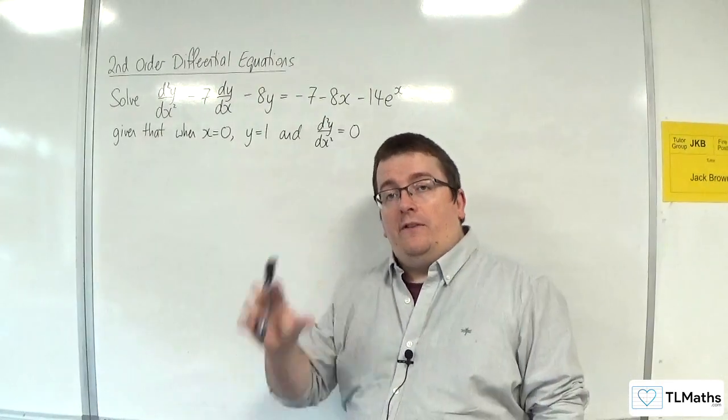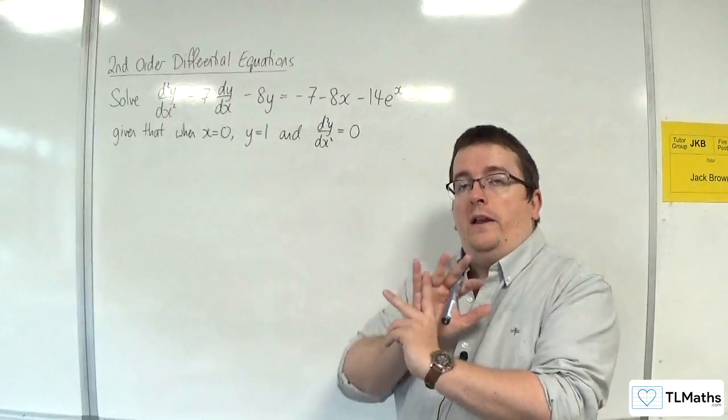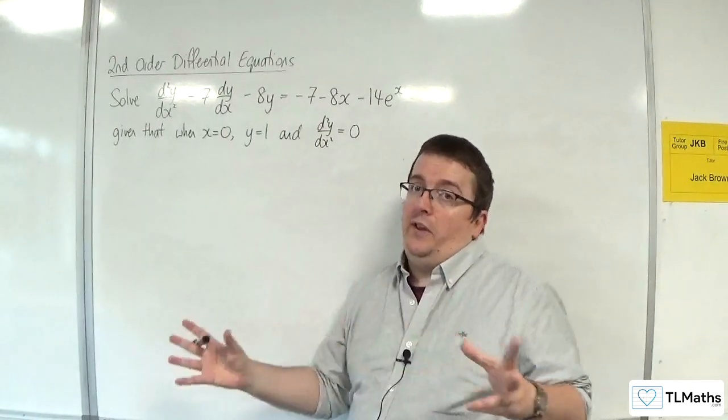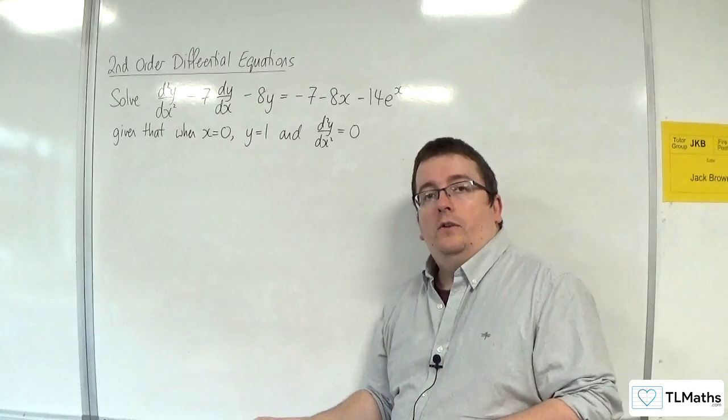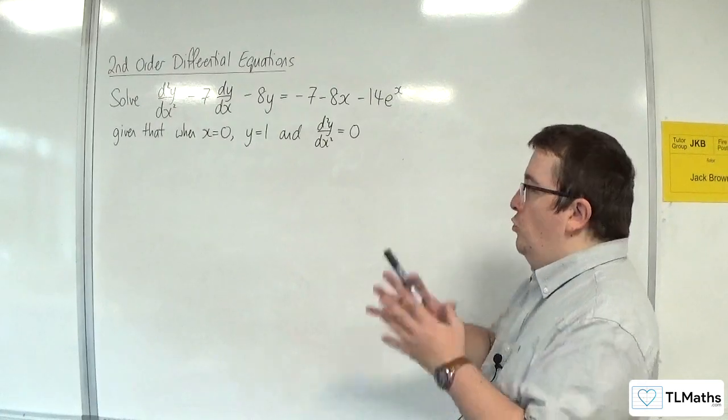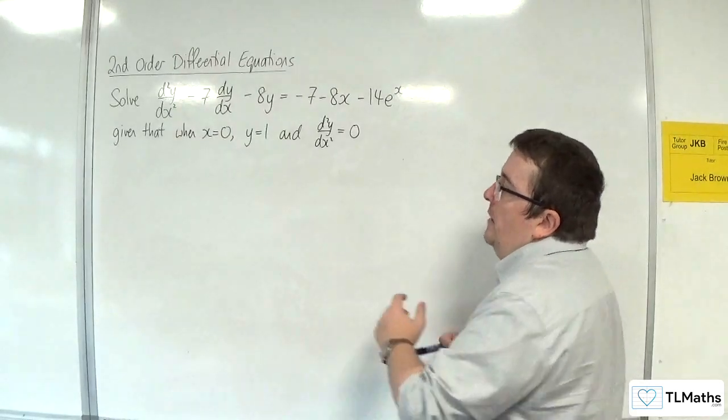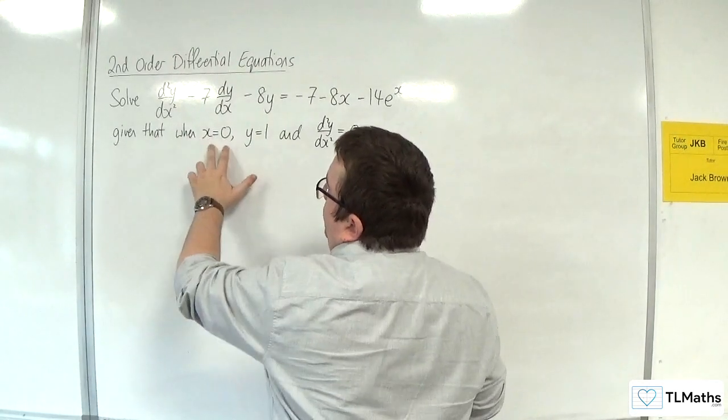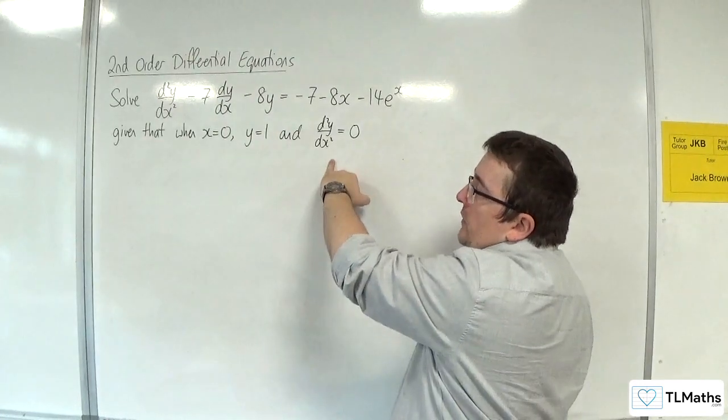And we've been given, so we know that when we solve this, we should get two unknowns. In the videos of this section, I've been using c₁ and c₂. We're now being given some boundary conditions, or initial conditions depending on the context of the problem, but that doesn't matter in this case. We're being told that when x is 0, y equals 1, and d²y/dx² is equal to 0.